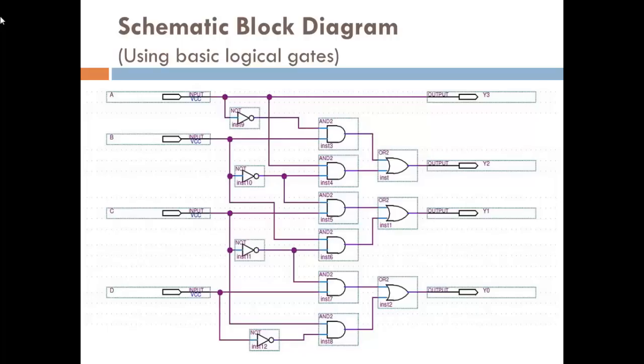We have four inputs A, B, C and D that represent the binary code. And we have in the other side the output Y3, Y2, Y1 and Y0 which represent the gray code. Y3 is directly connected to the input A while the other outputs Y2, Y1 and Y0 connected to a combinational OR AND and NOT gates to implement their functions.